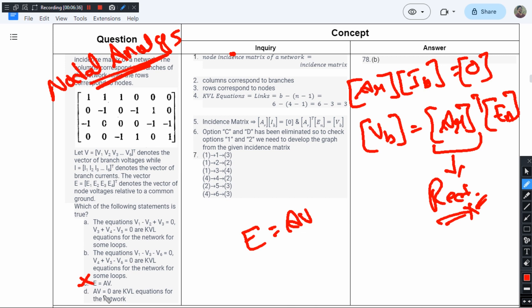And option D says AV equals zero or the KVL equations for the network. This cannot be true because we're seeing that AR into IB equals zero are the KCL equations that we find, not the KVL equations. So options C and D can be eliminated with the information we know.